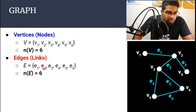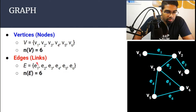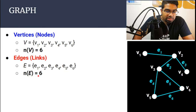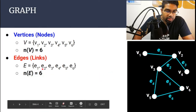Edges are represented in set notation as well. Each edge is represented as an element in the set. Edges can have different names and can be represented as letters too. Whatever they are, you just represent them as elements in the set. N(E) is the number of edges — here we have 6 edges, so N(E) equals 6.